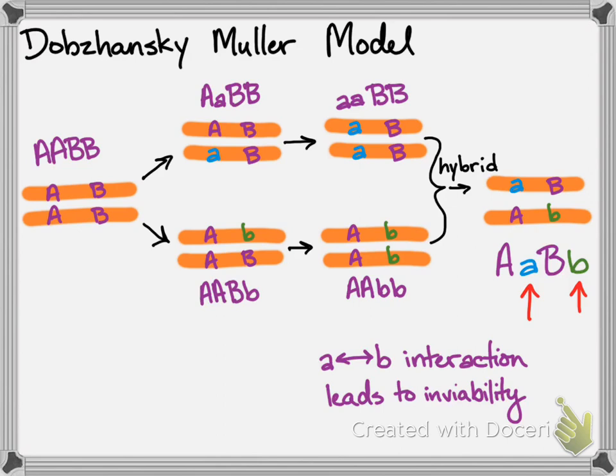Not every evolutionary biologist loves this model. Some say it's oversimplified or it focuses too much on the two incompatible genes, and not enough on the reasons the two populations took different evolutionary paths when the populations diverged and favored the different mutations in the first place.